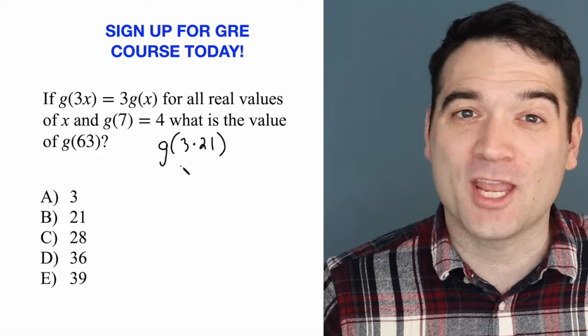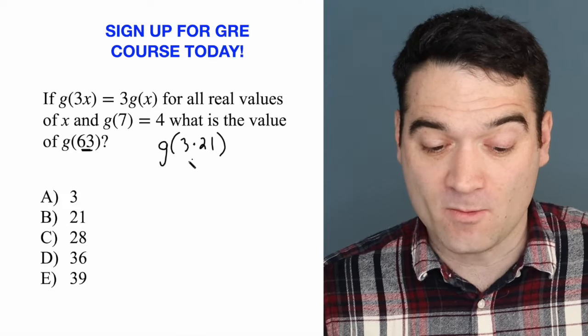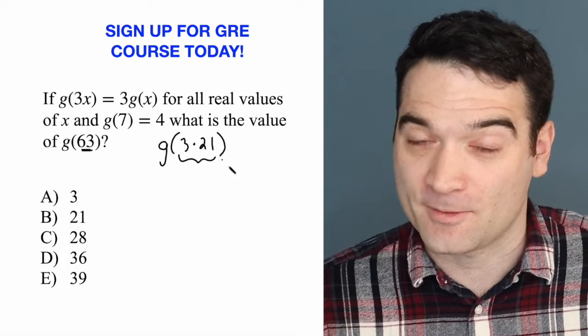I have not changed a thing here, right? 63 is 3 times 21. So I'm just rewriting this in a longer way: g of 3 times 21.